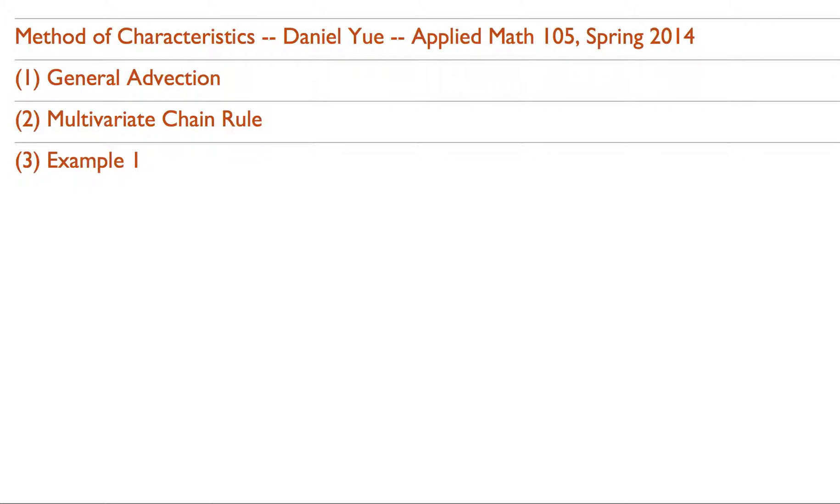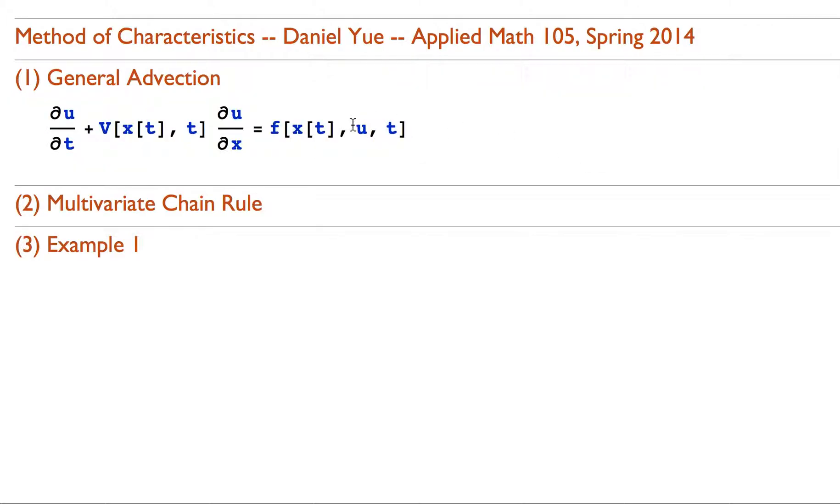So the method of characteristics is a basic problem-solving approach utilizing the idea of the multivariate chain rule to be able to solve an equation that looks something like this.